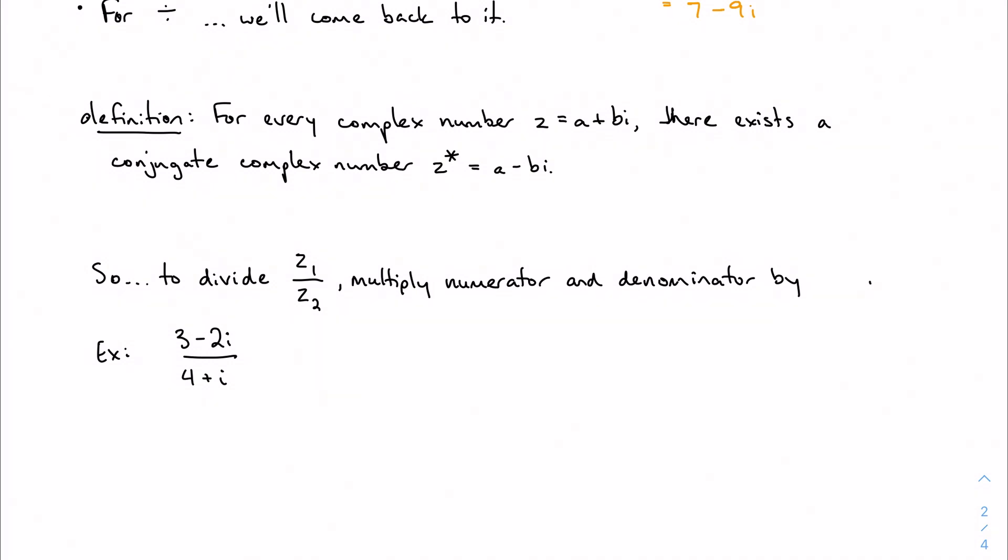For every single complex number there exists what we call a conjugate complex number. If we're denoting our complex numbers with a z, I'm going to denote my conjugate complex number with a z star. If you look closely, the only difference between the two is that the sign in the middle is changed. I'm changing the sign between my real part and my imaginary part. It's a big fancy name for one little tiny step.